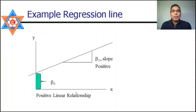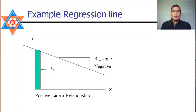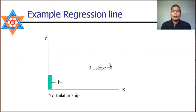The regression line shown here illustrates a positive relationship where as the value of x increases, the value of y also increases. In a negative relationship, the value of y decreases while x increases. In a third figure, there is no change in y as x changes, indicating no relationship.